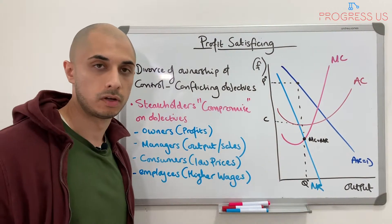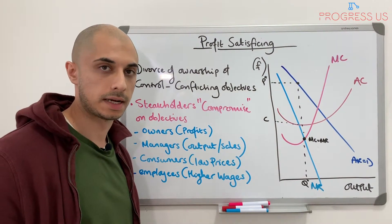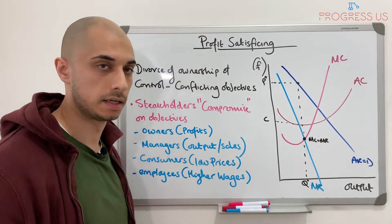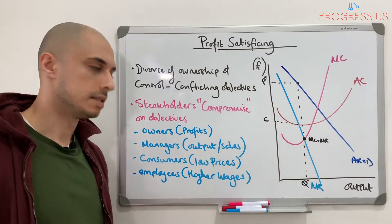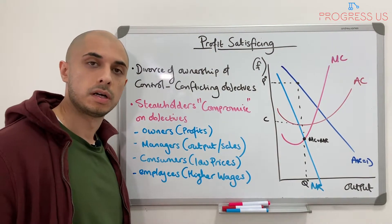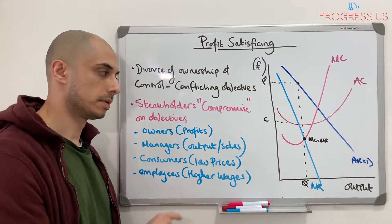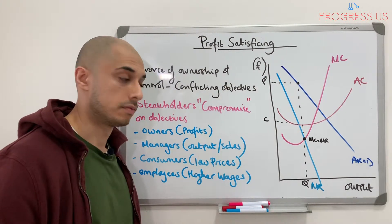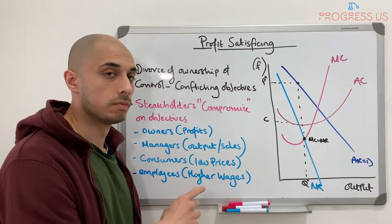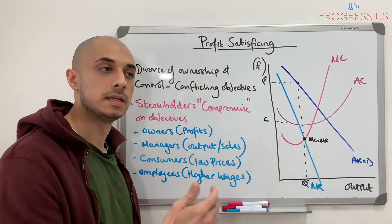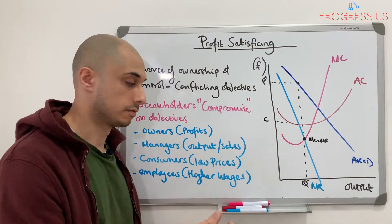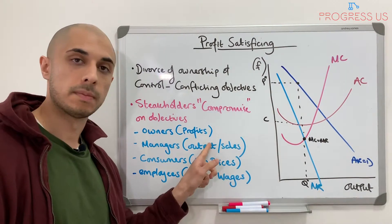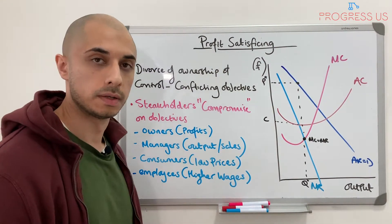Consumers look for low prices — to maximise their welfare, prices need to be low and quality needs to be high. Employees demand higher wages, and for this to work, profits need to be made or more importantly, the size of the firm needs to be larger for workers to also receive higher wages. This is very similar to what managers require.